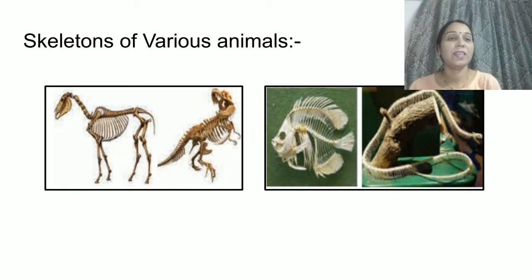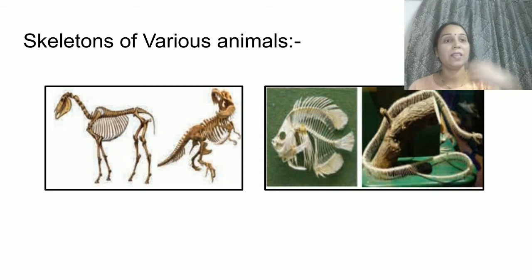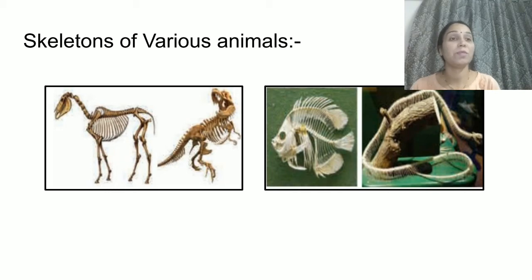Here is a very interesting picture showing the skeletons of various animals. For example, in dinosaur movies you must have seen the skeleton of a dinosaur — it is very huge. Then there is the skeleton of a fish and the skeleton of a snake. All these skeletons are different because these animals look different, and therefore their skeletal systems are also different.